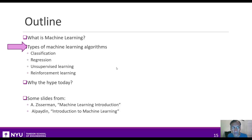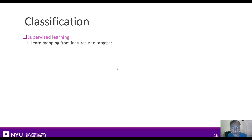Let's move on to the next section, talking about the types of machine learning algorithms. The first type we'll talk about is classification. Classification is a type of supervised learning problem. In supervised learning, you're trying to learn a mapping from features x to target y. We already saw a lot of examples of this in the last section.